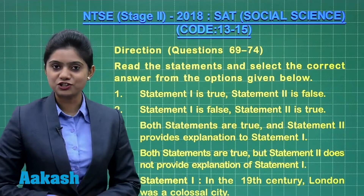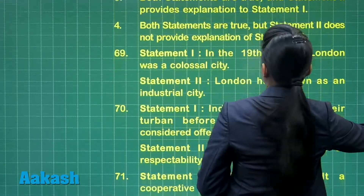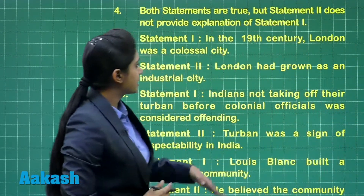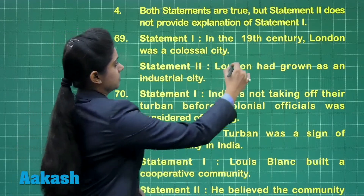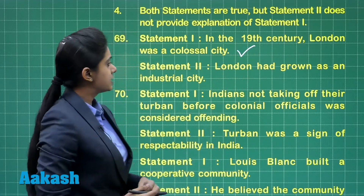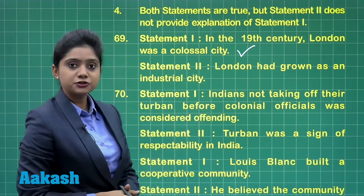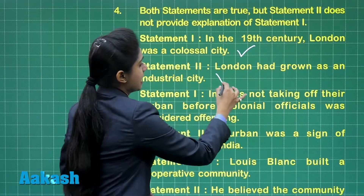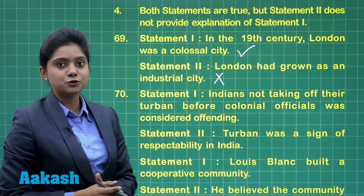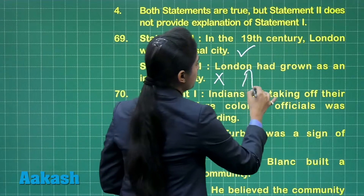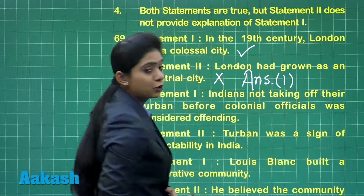Question 69: The first statement says in the 19th century London was a colossal city — this is a correct statement. The second statement says London had grown as an industrial city — this is an incorrect statement. So we will mark our answer as option number one.